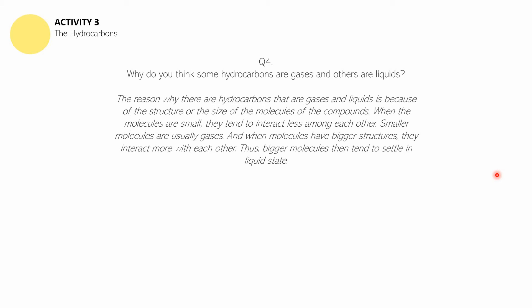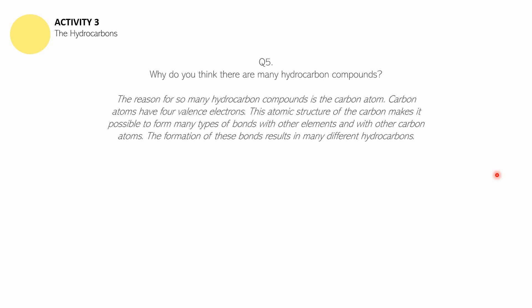The answer to question number five: The reason for so many hydrocarbon compounds is the carbon atom. Carbon atoms have four valence electrons. This atomic structure of carbon makes it possible to form many types of bonds with other elements and with other carbon atoms. The formation of these bonds results in many different hydrocarbons. The major reason is the number of valence electrons in carbon — four — which allows it to form different kinds of bonds to create hydrocarbons.